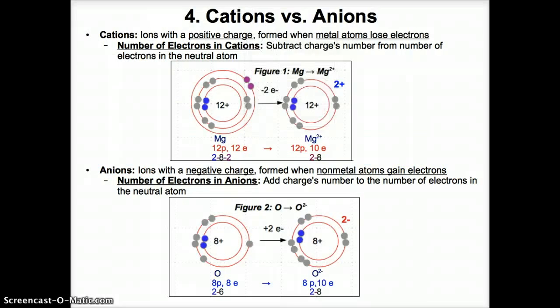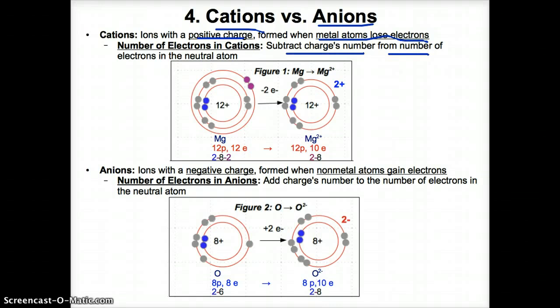Now let's discuss the two types of ions: cations and anions. Cations are ions with a positive charge that form when metal atoms lose electrons. You know that metals are to the left of the steps in the periodic table. To find the number of electrons in cations, take the cation's positive charge number and subtract it from the number of electrons in the neutral atom. We know Mg is a metal since it's to the left of the steps.